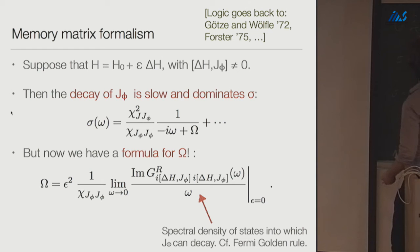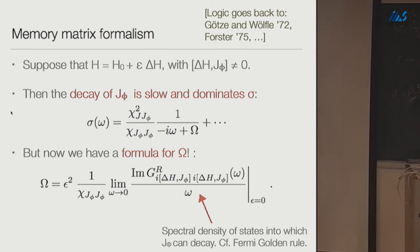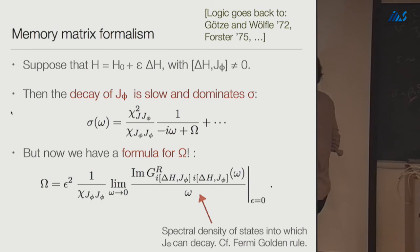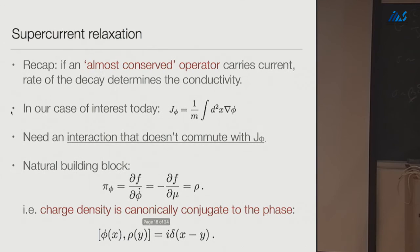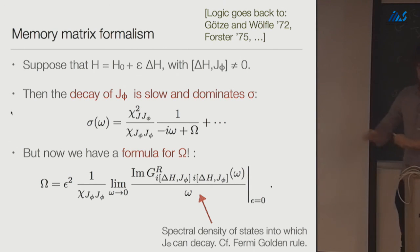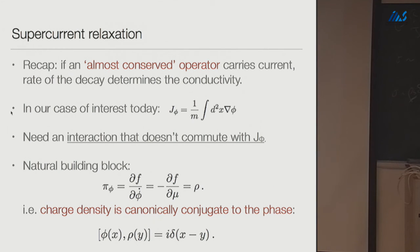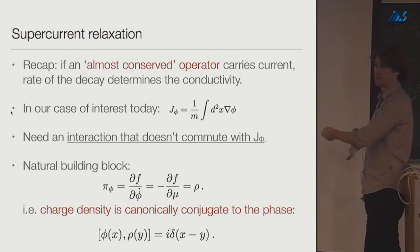The decay rate omega is a two-point function of J_phi-dot. If J_phi-dot is zero — meaning J_phi is exactly conserved — then omega is zero and you recover infinite conductivity. The memory matrix rearranges a current-current two-point function into a two-point function of time derivatives, which is useful whenever you have a slow long-lived quantity. To use this framework you need to specify delta_H — the part of the Hamiltonian that breaks conservation of the supercurrent.